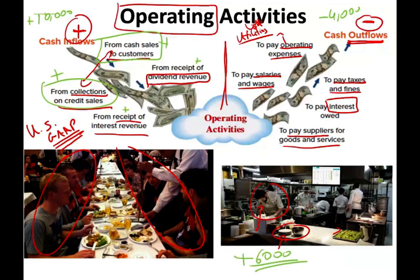Think of operating activities in terms of the income statement. What goes on the income statement is what happens when you operate the business. Think of cash inflow as revenue — but all in cash. Think of cash outflow as expenses — but all in cash. Converting all your revenues to cash and all your expenses to cash, and finding out on a cash basis whether you have more revenue cash than expense cash — and obviously, you want more revenues than expenses.